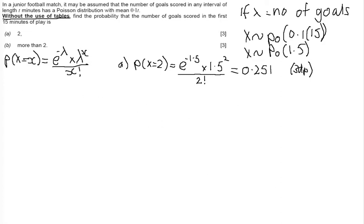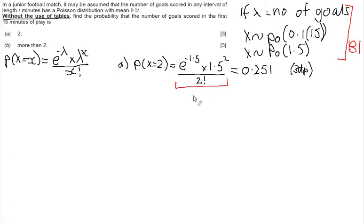For marks on this question: we get a statement mark for setting up the Poisson distribution correctly and stating that X has mean 1.5. Then in part A, we get one method mark for showing the substitution into the formula — if you don't show that, you lose the mark. Finally, one accuracy mark for a correctly rounded answer with the rounding stated.